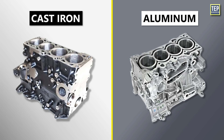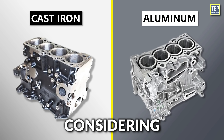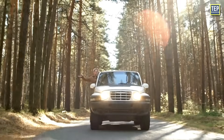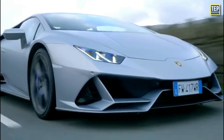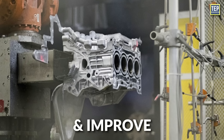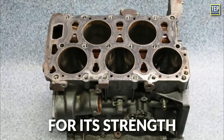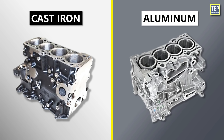Whether you prefer an iron or aluminum engine block, both have advantages and disadvantages worth considering. The choice between a cast iron and aluminum engine block will depend on the type of vehicle and the performance requirements. For example, a high-performance car may require an aluminum engine block to reduce weight and improve performance, while a heavy-duty truck may require a cast iron engine block for its strength and durability. Ultimately, the decision will be made by the vehicle manufacturer based on the specific needs of the vehicle.